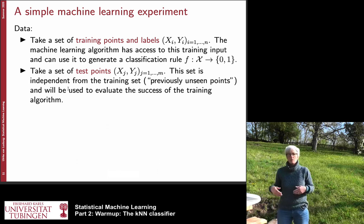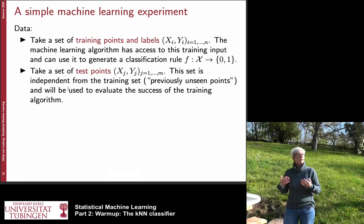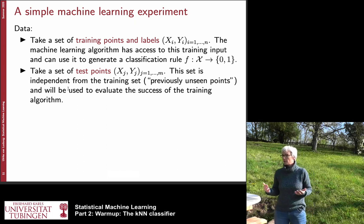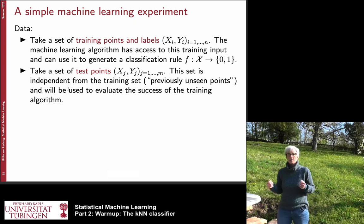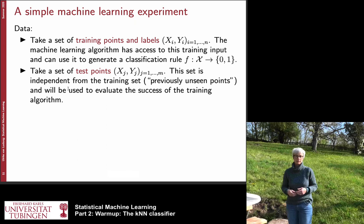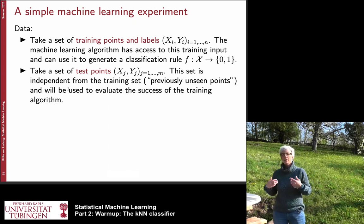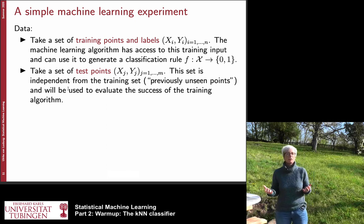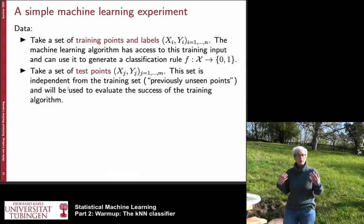Once we have our algorithm, we need to test it. We consider a set of test points of the same form as our input points, called x_j and y_j, where j ranges from 1 to m. Importantly, this test set is independent of the training set — none of the test points already occur in the training set. This is what we mean by previously unseen points, as defined in the last lecture. The test set is used to evaluate our algorithm.